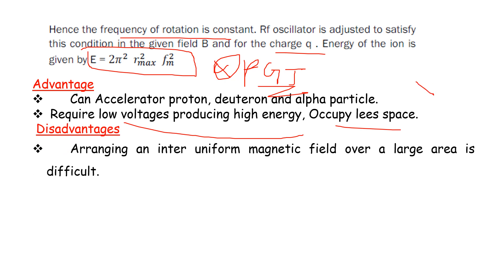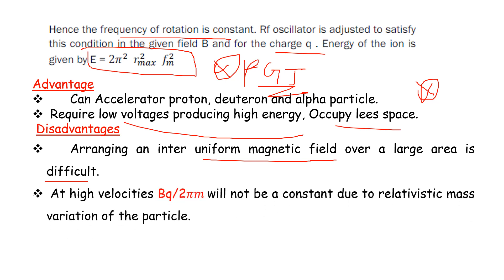Disadvantages: first, maintaining a uniform magnetic field over a large area is very difficult. Second, at high velocities, the cyclotron frequency BQ/(2πm) will not remain constant due to relativistic mass variation of the particle.